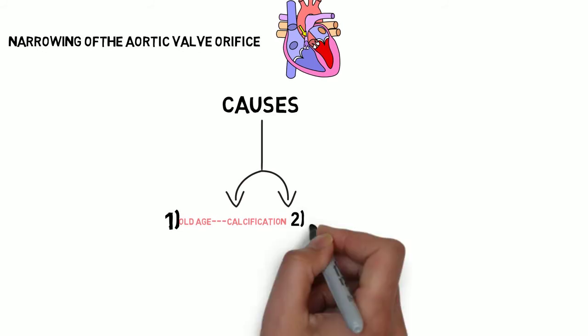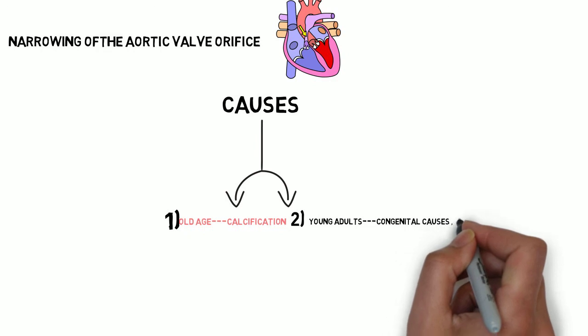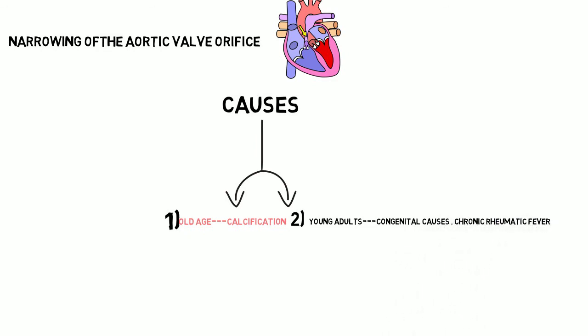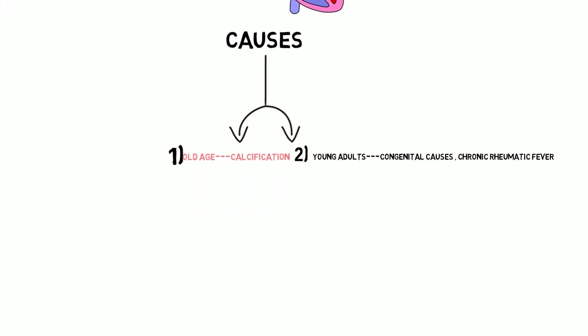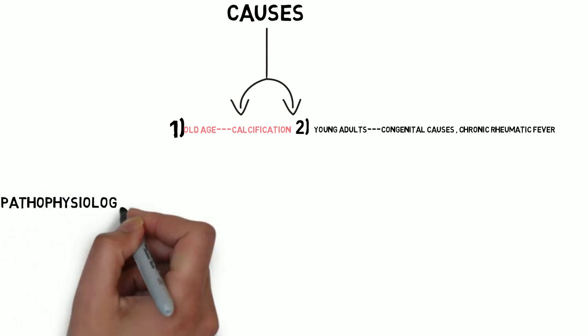In the case of young adults, aortic stenosis is mainly due to congenital causes — for example, congenital stenosis of the aortic valve — or it may be due to chronic rheumatic fever. Whenever there are repeated attacks of rheumatic fever, the valve becomes stenosed. So if you encounter a young adult with aortic stenosis, taking a previous history of rheumatic fever is a must.